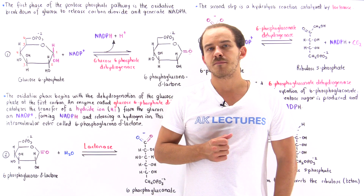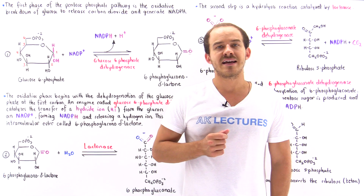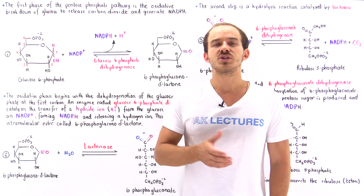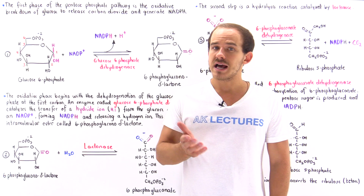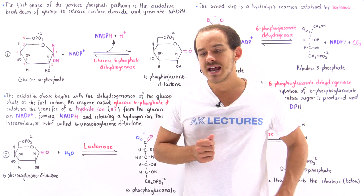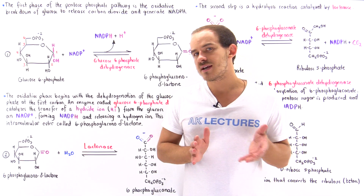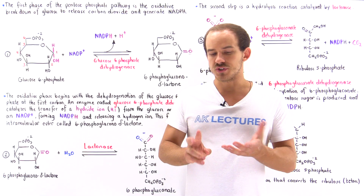The pentose phosphate pathway is a very important biochemical process that takes place inside the cytoplasm of our cells. This process is important for two different reasons.